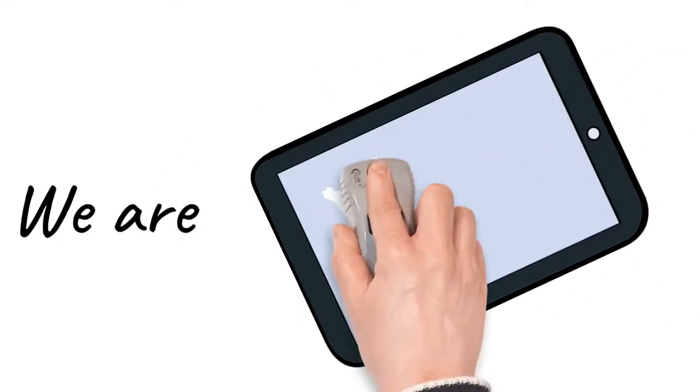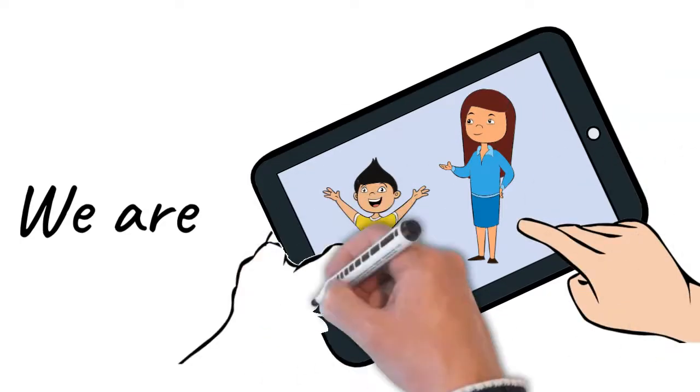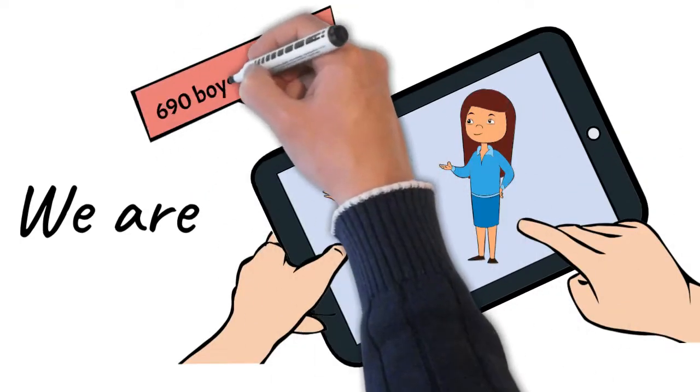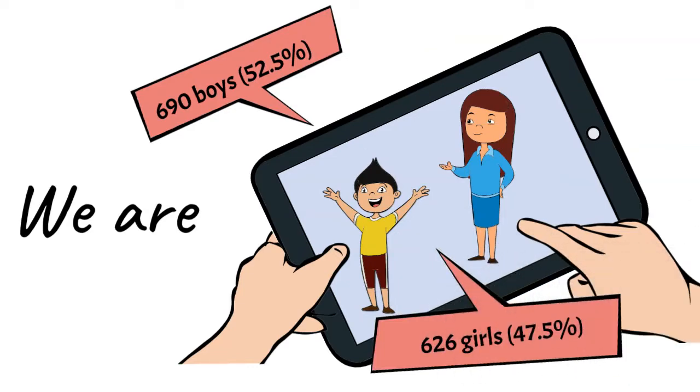Of the 1,316 pupils currently on roll, 52.5% are boys. This is different to the city of Edinburgh average where 51.2% of the population are women.